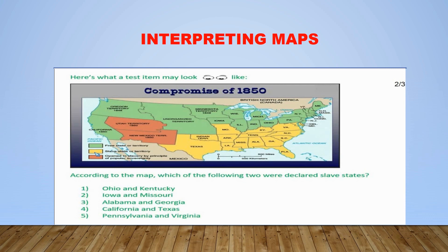When we look at the color yellow, which is all of this area here, according to our map key, we see that these states and territories were actually declared slave states and territories. And then, when we look at the color rust, which is this area here on the map, we see that according to our map key, it is telling us that these areas were opened to slavery by principle of popular sovereignty.